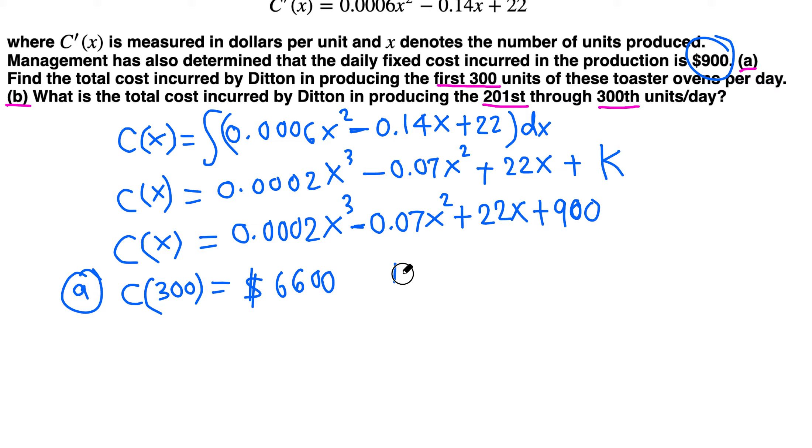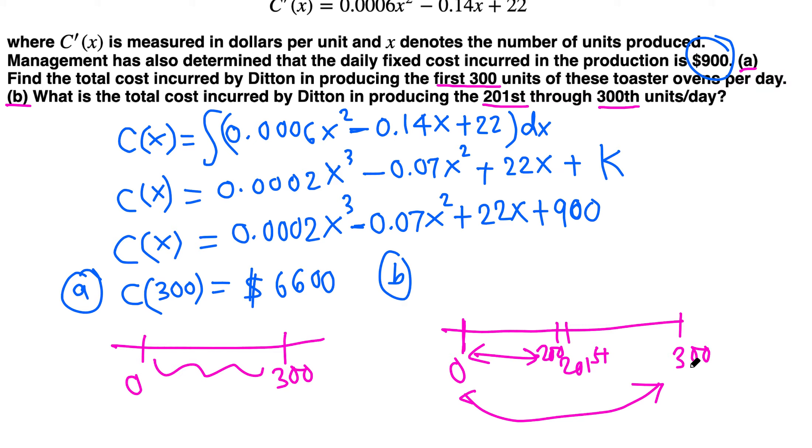In part b, we need to find the total cost from 201st through 300th. The previous one is producing starting from 0 all the way to 300. In part b we are asked to determine from 201st through 300th. We know 0 through 300, that's $6,600. If we can find 0 through 200, then subtract: total cost of producing 300 minus cost of producing 200.